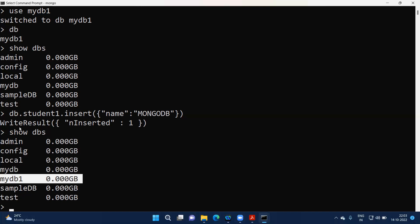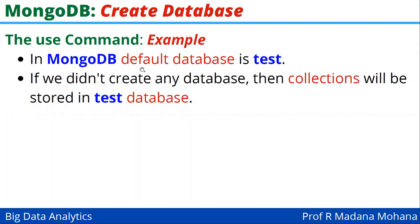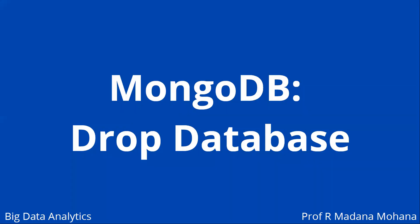Like that, we create a database and verify it using 'show dbs' by inserting at least one document into a collection — the collection name can be whatever you choose dynamically. In MongoDB, the default database is 'test'. If we did not create any database, then collections will be stored in the default test database by default.